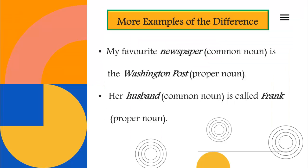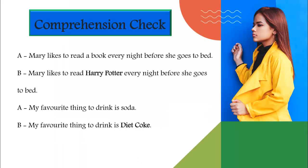Let's look at some more examples. 'My favorite newspaper is Washington Post.' The word 'newspaper' is a common noun whereas Washington Post is a proper noun as it is the name of a specific newspaper. Second example: 'Her husband is called Frank.' The word 'husband' is a common noun whereas Frank is a proper noun as it's the name of a person. In each of these examples, sentence A uses a common noun and sentence B replaces this common noun with a proper one.